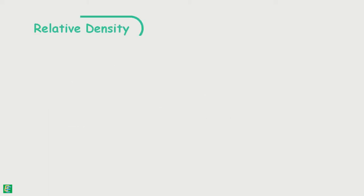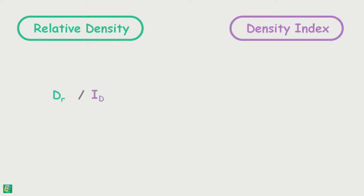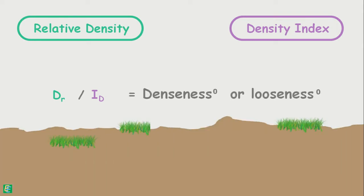Relative density, which is also called the density index, is denoted as Dr and Id. It is the degree of denseness or looseness of natural deposits of coarse-grained soils.